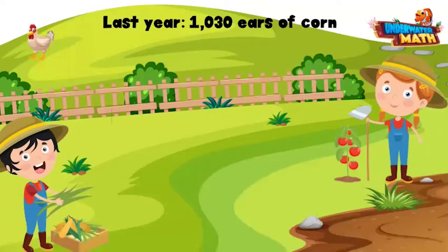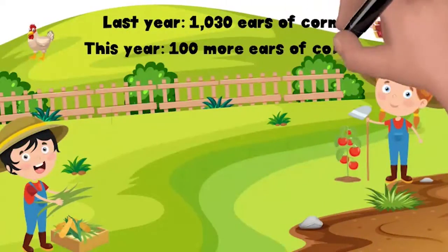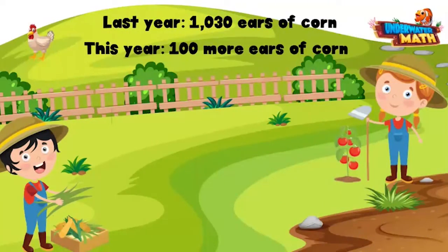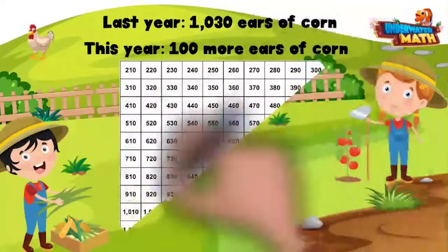This is my brother Sammy. He grew 1,030 ears of corn last year. This year he grew 100 more ears of corn. We can also look at a thousands chart to help us out.